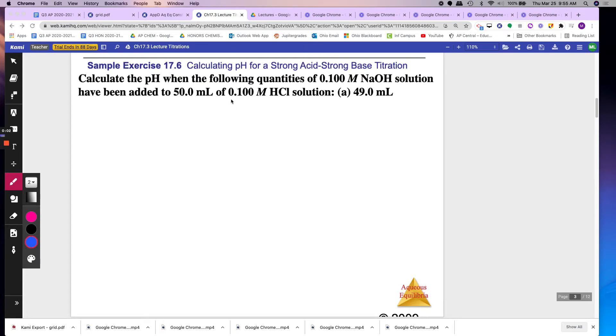Let's do some stoichiometry problems. These are titration problems, and they're nothing more than stoichiometry. First, you have to write an equation that says calculate the pH from the following quantities of 0.1 molar NaOH. So I'm going to go ahead, this is plus 1, minus 1. Just ignore that spectator ion, just write the OH minus.